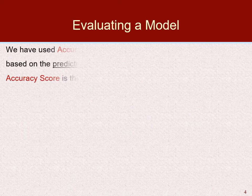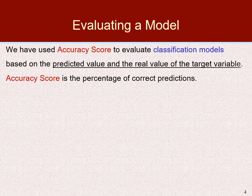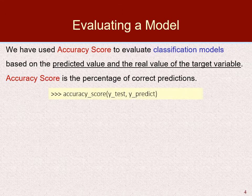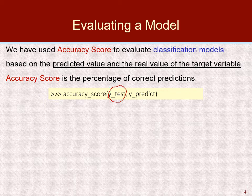So far, we have used accuracy score to evaluate our classification models based on the predicted value and the actual value of the target variable. Accuracy score is just the percentage of correct predictions. We feed in the actual value of the target variable and the prediction we have made, and the percentage of correct predictions is the output of this function.